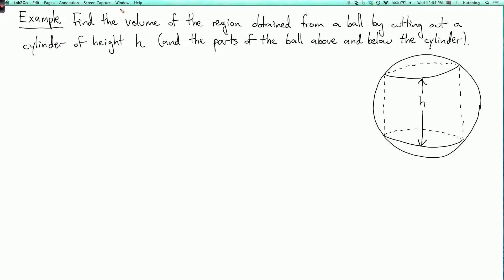Here's another classic example of an integral in polar coordinates. The problem is to find the volume of the region obtained from a solid ball by cutting out a cylinder of height h and the parts of the ball above and below the cylinder.